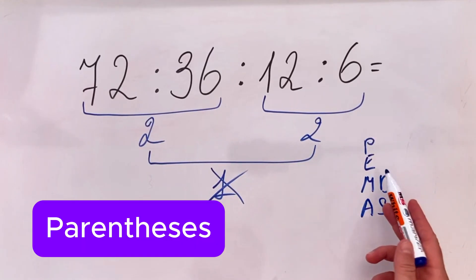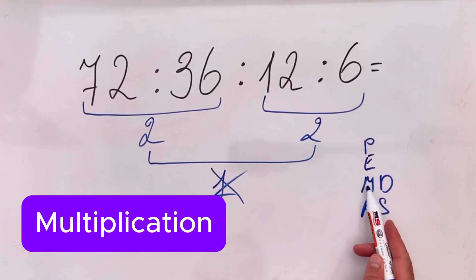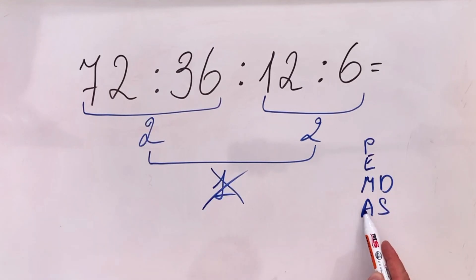As you all remember, we have PEMDAS where P stands for parenthesis, E for exponents, M for multiplication and division, A for addition, and S for subtraction.